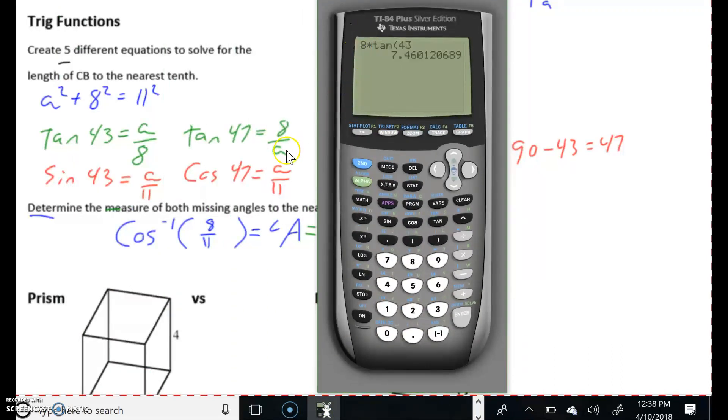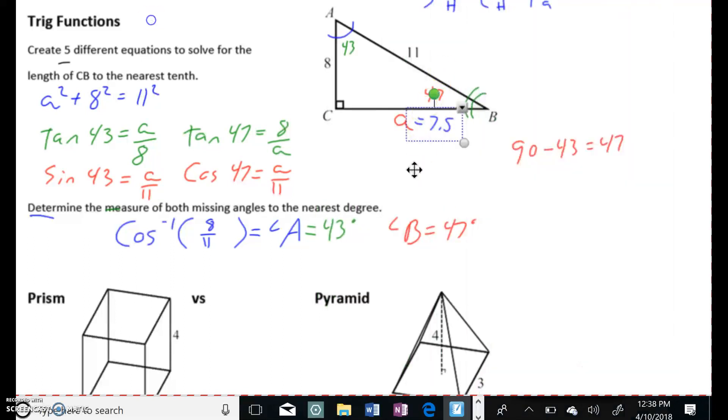And all these equations are going to give me the same thing. Like if you look at some of these other options here. Like here, I could do 11 times... If I cross multiply this one, the sine 43 equals a over 11. 11 times sine 43. 7.5. Now, the decimals are slightly different because, remember, these angles aren't exactly 43 and 47. I rounded these to be whole numbers. So they're going to be slightly different. But they could all be used to get that.